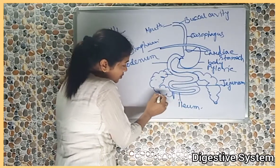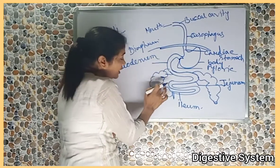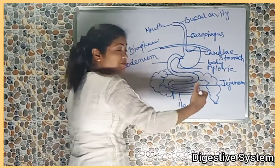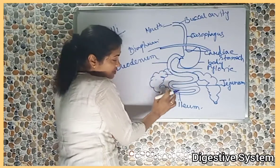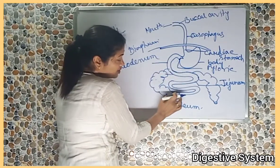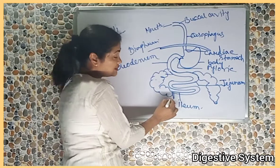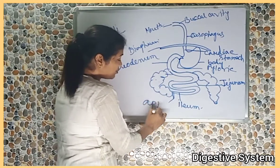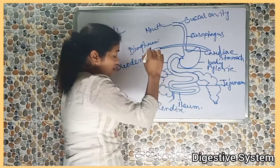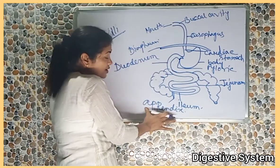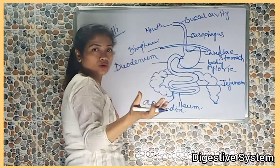After the small intestine, this part is known as the large intestine, and it has a larger diameter than the small intestine. Just between the small intestine and the large intestine, there is a small pouch-like organ known as the appendix. The appendix is a vestigial organ, as you know.